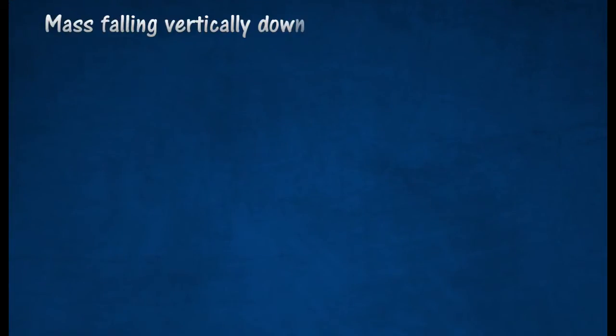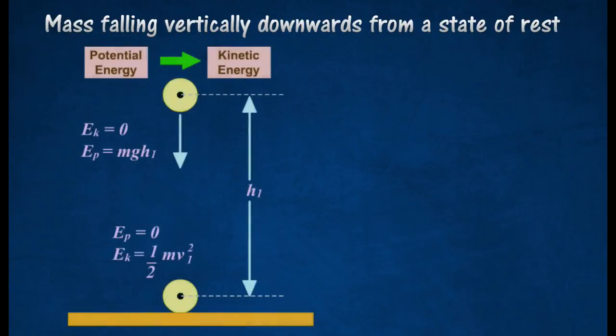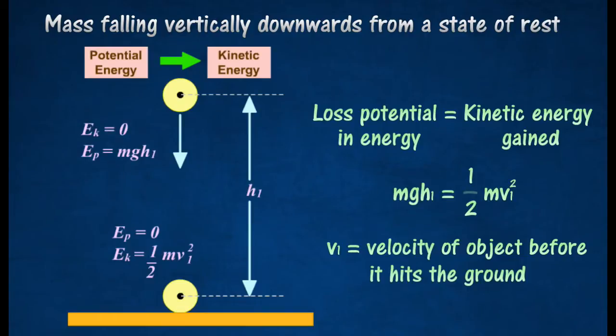For an object of mass falling vertically downwards from a state of rest, its loss in potential energy is equal to the amount of kinetic energy gained, assuming that no energy is lost due to air resistance.